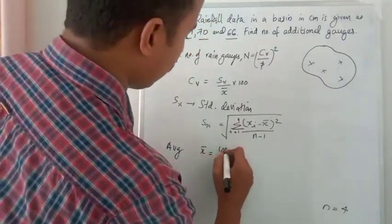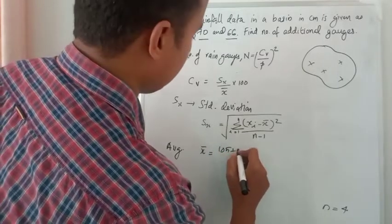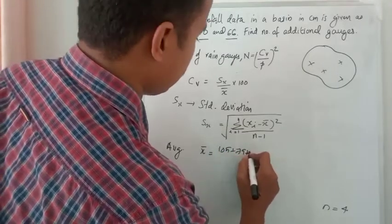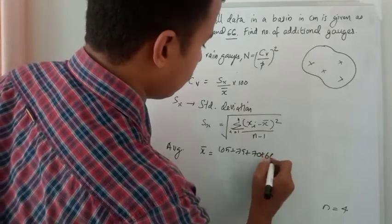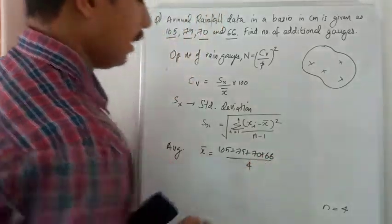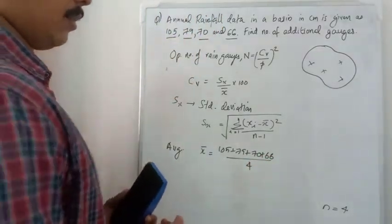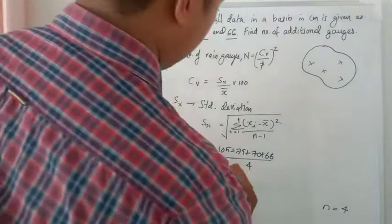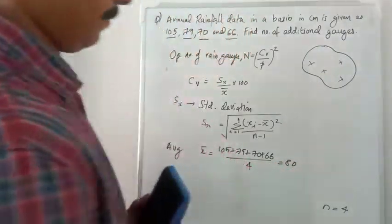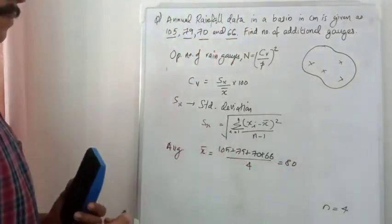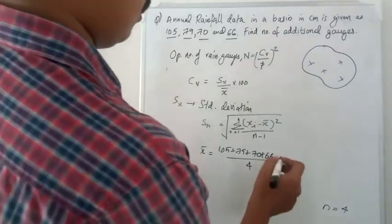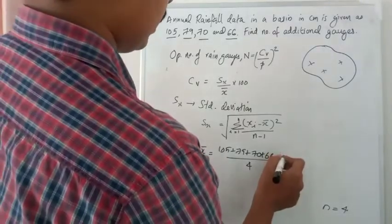We go from bottom to top in the order of equations. The average value X̄ is: (105 + 79 + 70 + 66) / N, which equals 80. So X̄ = 80.